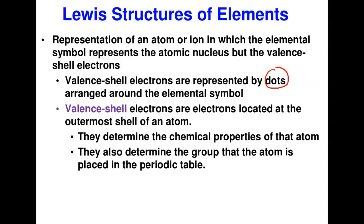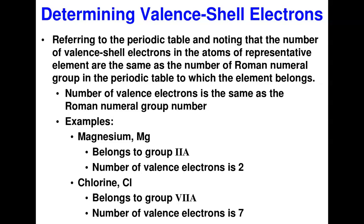As we discussed in earlier modules, valence electrons determine the chemical properties of an atom and they determine the group in which an atom is placed in the periodic table. All the chemical properties of elements result from the valence shell's ability to either lose or gain electrons.